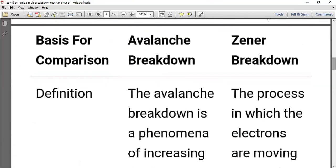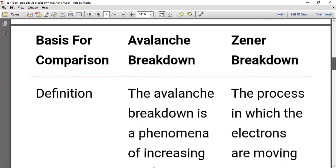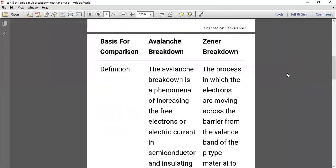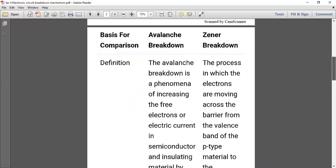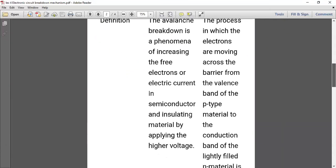The basic comparison between avalanche breakdown and zener breakdown - first is definition. The avalanche breakdown is a phenomenon of increasing the free electrons or electric current in semiconductor and insulating material by applying higher voltage.